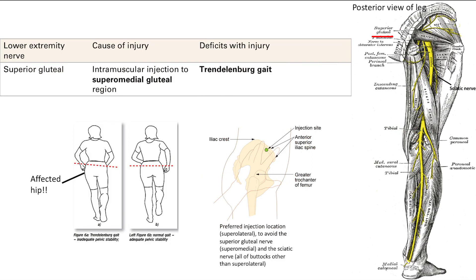Next is the superior gluteal nerve, which innervates the gluteus medius and minimus — remember the inferior gluteal nerve innervates the gluteus maximus. This can get injured by an intramuscular injection into the superior medial region of the buttocks. To avoid this, inject into the superior lateral region. If you do injure it, the patient gets Trendelenburg gait — a contralateral pelvic tilt because the muscle stabilizes the opposite side of the pelvis during weight-bearing.